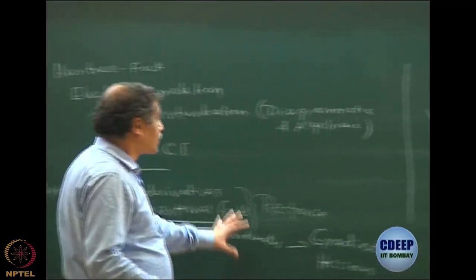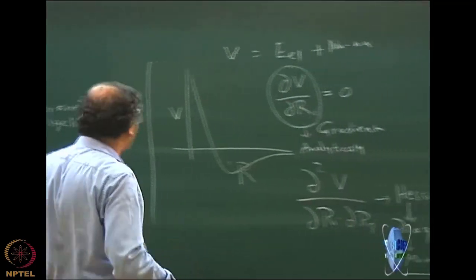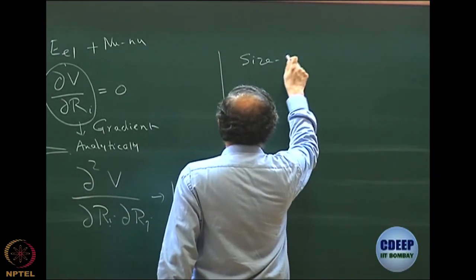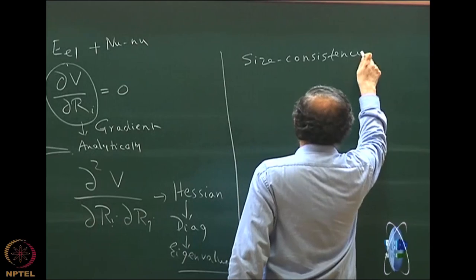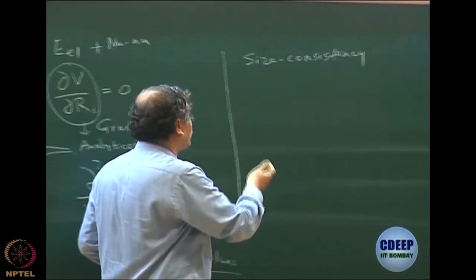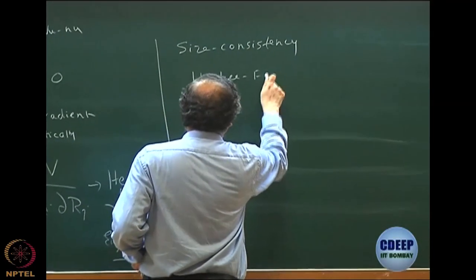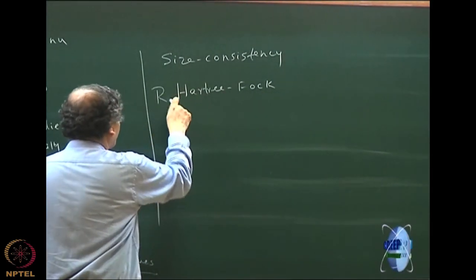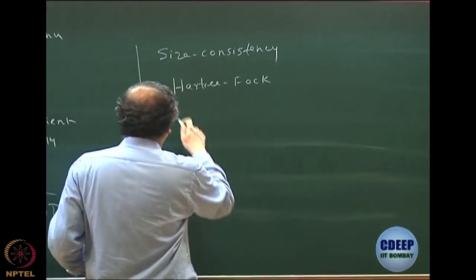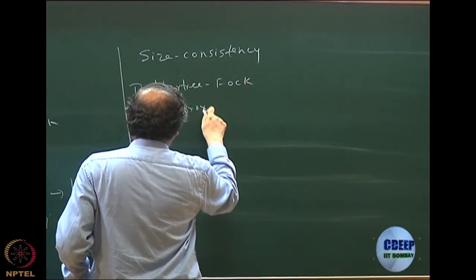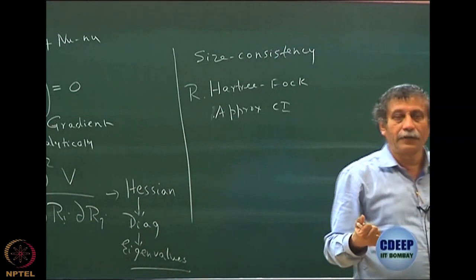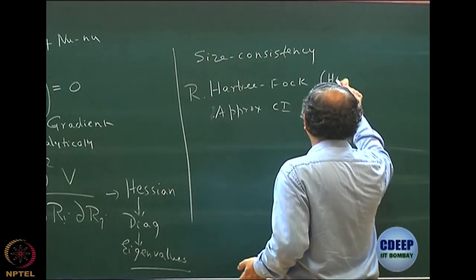We have also discussed in great detail the important problem of size consistency — when is a theory size consistent and when is it not. In particular, we discussed Hartree-Fock: even restricted Hartree-Fock may not be size consistent when a closed-shell molecule fragments into open plus open; however, if it goes into closed plus closed, it is size consistent. But even if Hartree-Fock is size consistent, if I do approximate CI, the size consistency can break down. We took the system H4 going to H2 + H2 and showed with an example that it goes correctly with restricted Hartree-Fock, but this breaks down if I do approximate CI — in particular DCI.